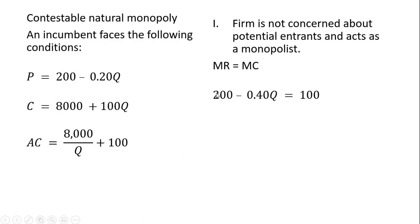Marginal revenue in this case, the simple way of getting it is just take this inverse demand and have a slope that's twice as steep, and then set that equal to marginal cost, the derivative of the cost function with respect to output. Solving for Q, this firm will produce 250 units. Plugging the 250 into the inverse demand, it'll set a price of $150 per unit. So here's a firm that is not concerned about entry.